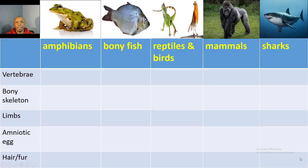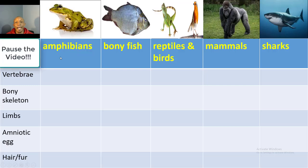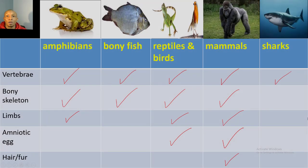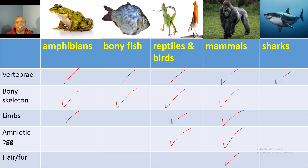Now it's time for you to create your own cladogram. You're going to check off the following characteristics for each of the organisms — if they have it, put a check by it; if they don't have that characteristic, leave it blank. You have two minutes to do this and you can pause the video beginning now.